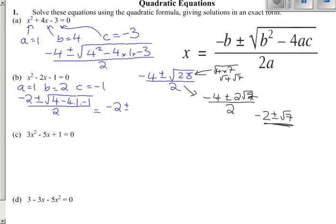Minus 2 plus or minus root 8 divided by 2, and root 8 can be tidied up as well. Root 8, which is the same as 4, this is the same as the square root of 4 times the square root of 2, so it's 2 root 2.